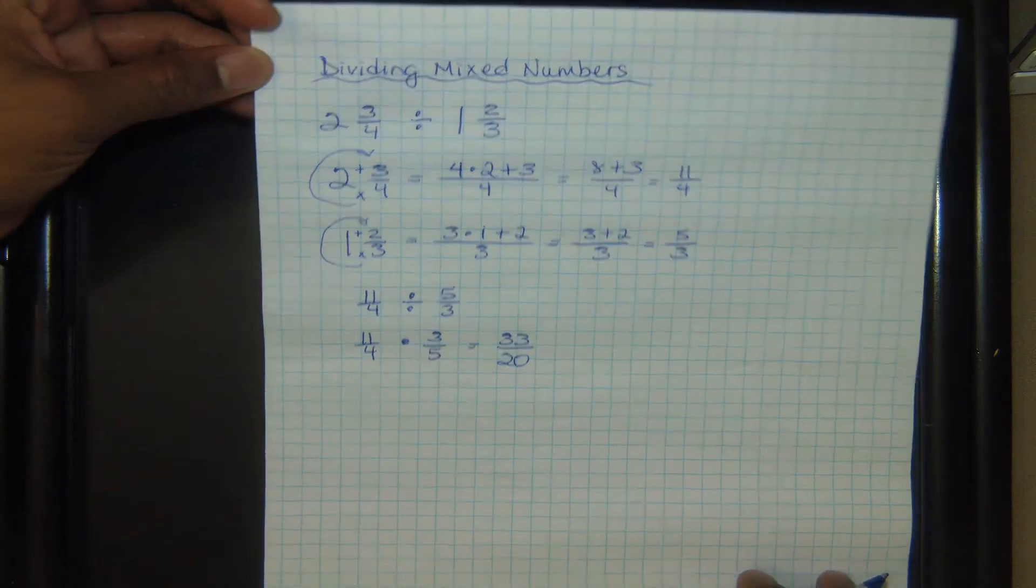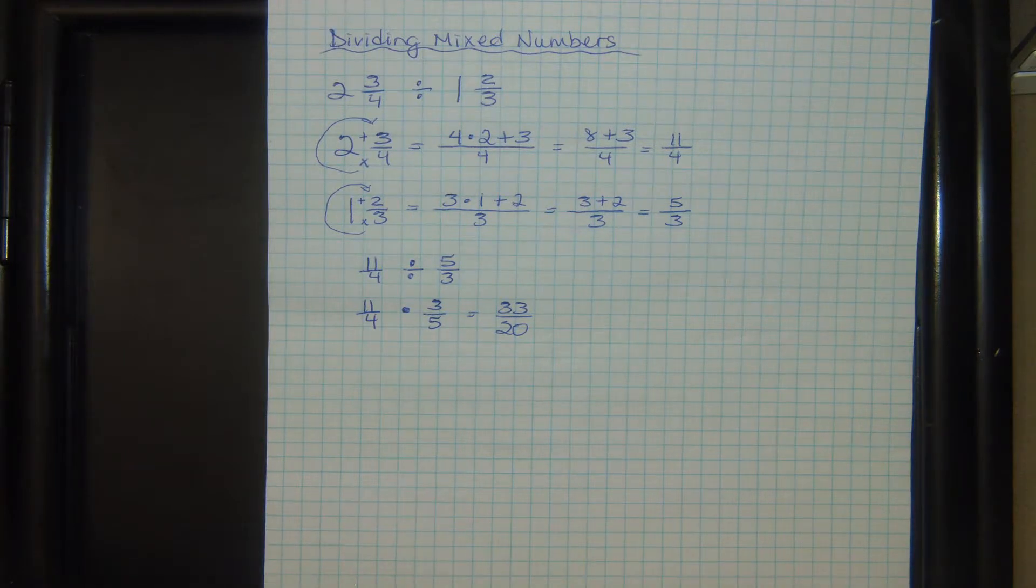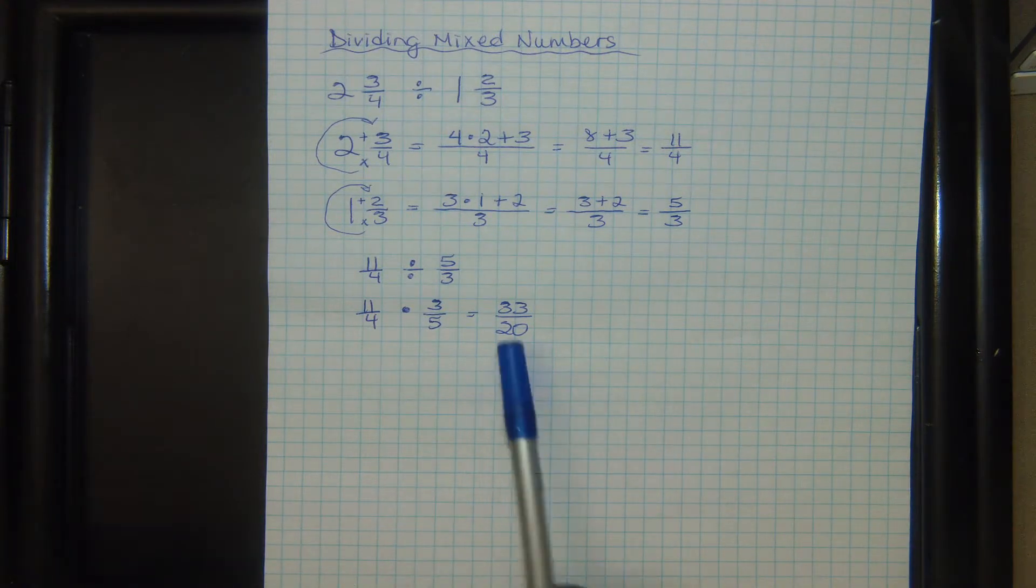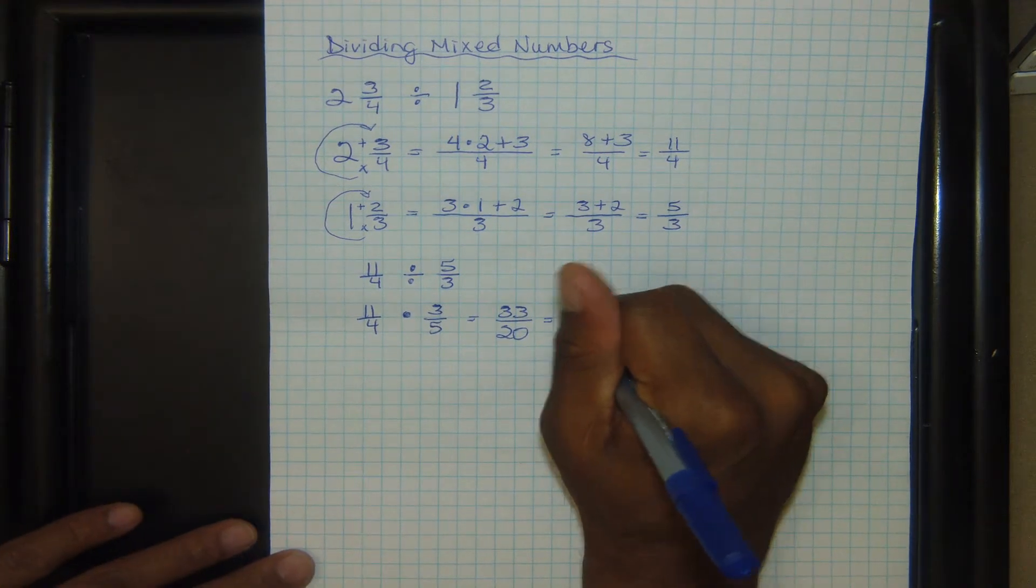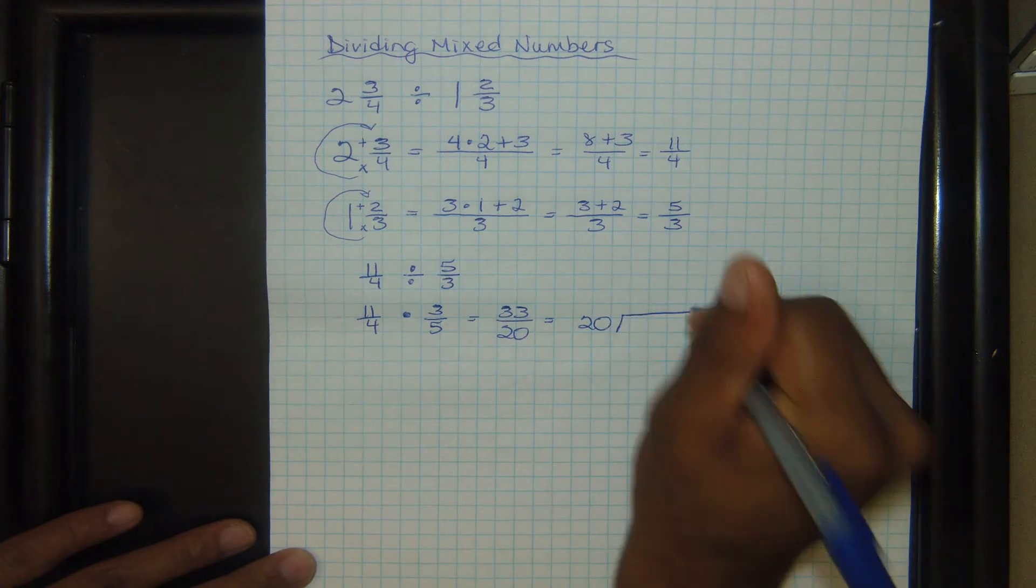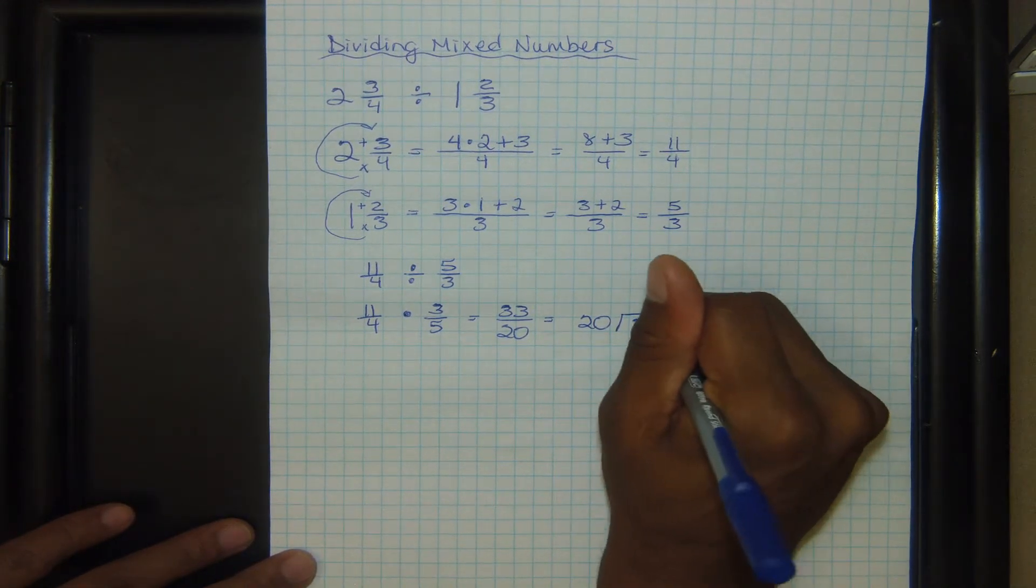Now, we don't want to necessarily leave our answer like this. We want to be able to change it back to a mixed number. And I did a mini lesson on that one already, so we're going to go ahead and just jump straight into that. The denominator goes on the outside, and in this case, the denominator is twenty. The thirty-three goes on the inside. The thirty-three is the numerator.